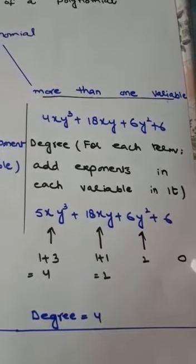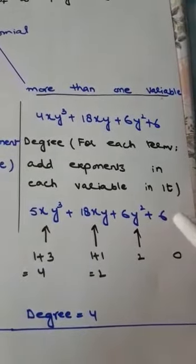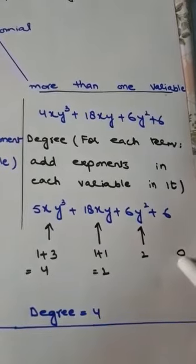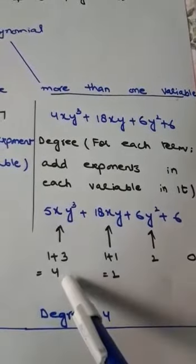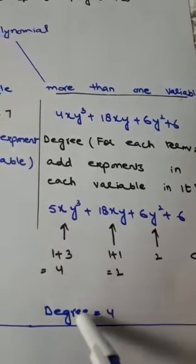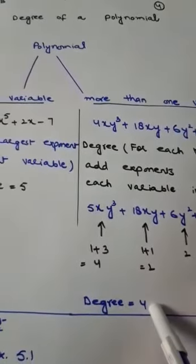In the fourth, the exponent is 0 as no variable is there. So among all these exponents 0, 2, 2, 4, the highest exponent is 4, that's why the degree is 4.